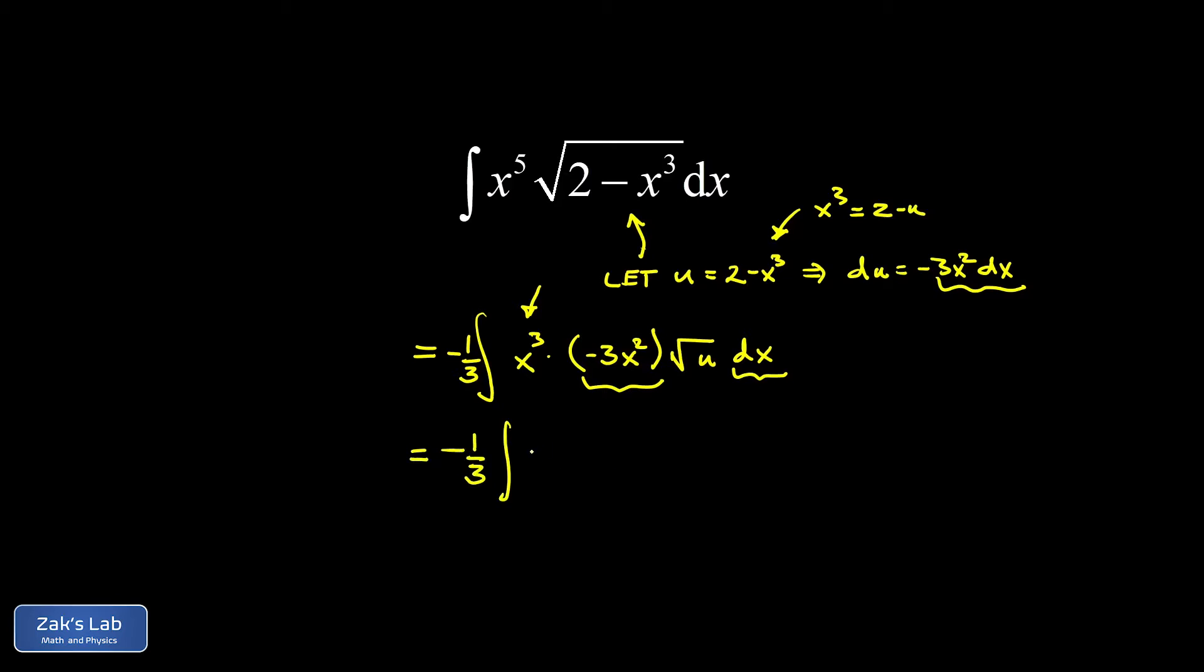I end up with negative one third integral of 2 minus u. Then I'm going to write the square root of u as u to the one half, because what I'm going for here is a bunch of powers of u in my integrand. And then the negative 3x squared and the dx, those combine to give us du.